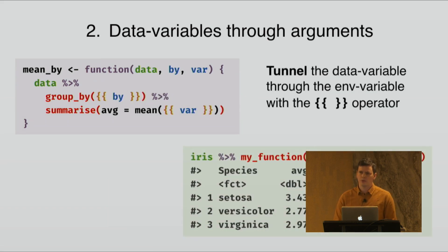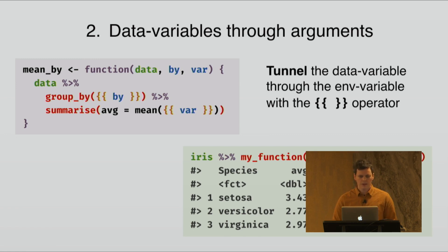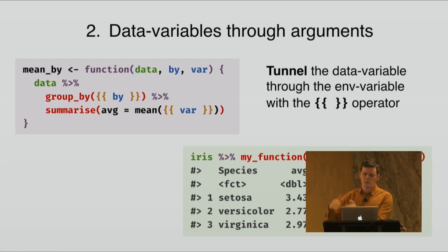The solution is to tunnel the data variable through the environment variable. To tunnel a data variable you use this new operator — curly-curly — which was added in rlang last year. That allows the caller of your function to use a data variable, and it will get forwarded through the environment variable and evaluated in the data frame as it should.